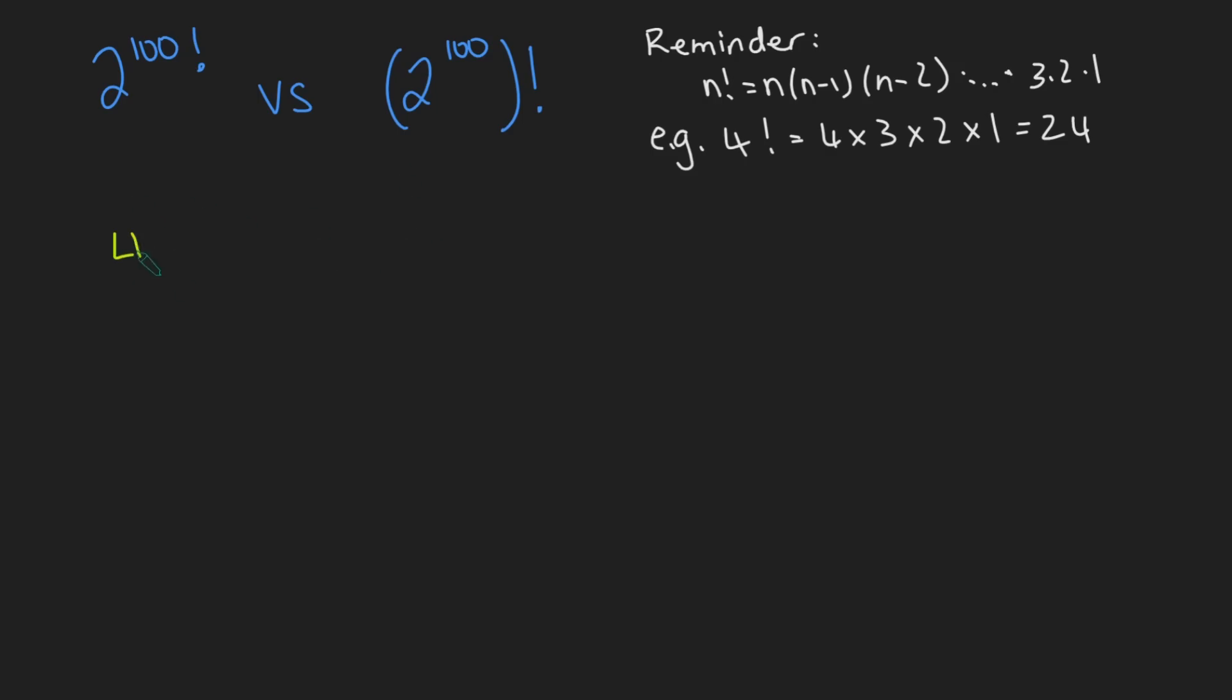Let's start with our left-hand side here, which is 2 to the 100 factorial. This is just the same as 2 to the 100 times 99 factorial. And now we can just use basic power rules and say that this is the same as 2 to the 100 to the power of 99 factorial.